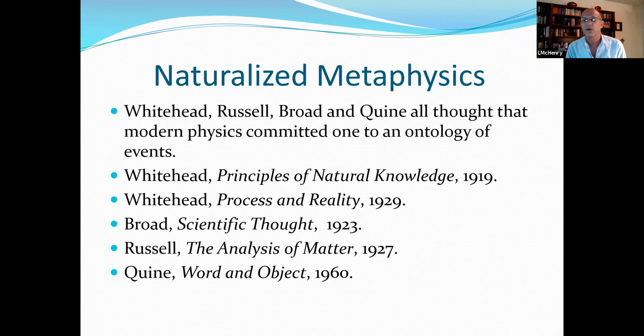Russell, in the analysis of matter and other works in 1927 is where he is mainly espousing an ontology of events. And then, of course, Quine's Word and Object and other papers such as Whither Physical Objects, in which he too defended an ontology of events.